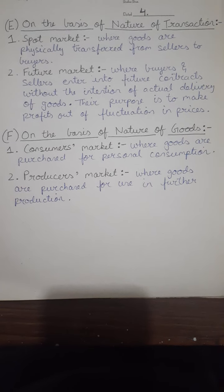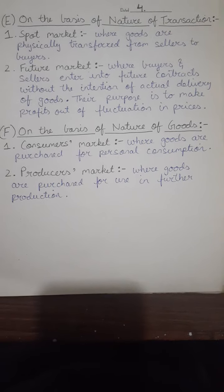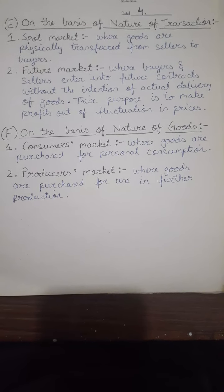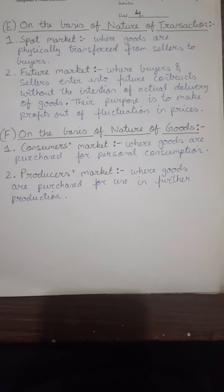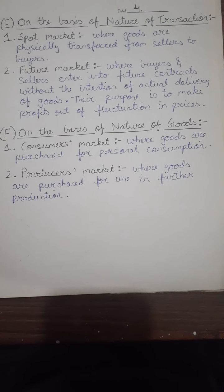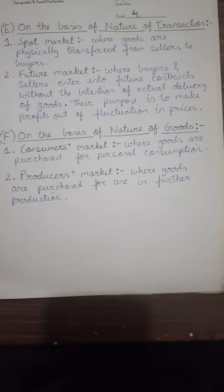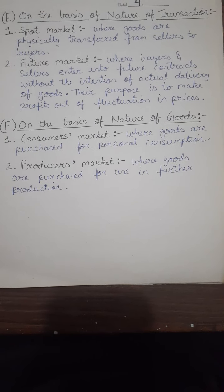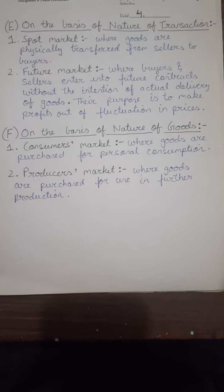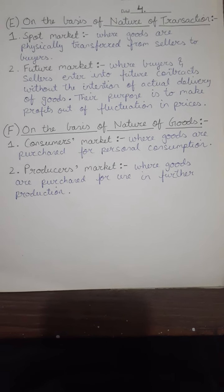Next, on the basis of nature of goods: consumer market and producer market. Consumer market, as the name itself tells, is a market where consumer goods are available. Producer market is where goods which are used in further production by the producers are purchased and sold. Thank you.